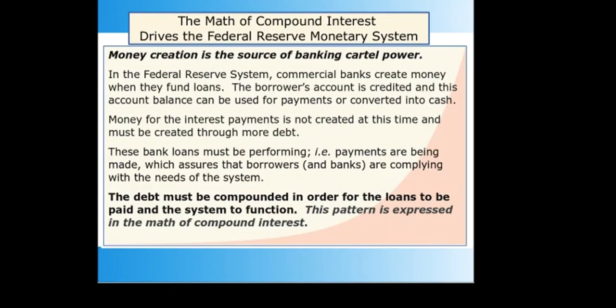The math of compound interest drives the Federal Reserve monetary system. Money creation is the source of banking cartel power. Money is created through monetizing debt. The loan amount and added interest must be repaid by the borrower, but there is no money created specifically for the interest. Bank account money is also decreased when loans are repaid, and money available for debt repayments is decreased by savings. The interest must come from money created by subsequent loans and circulated in the economy. The only way this debt and interest can be paid is by increasing or compounding the debt.